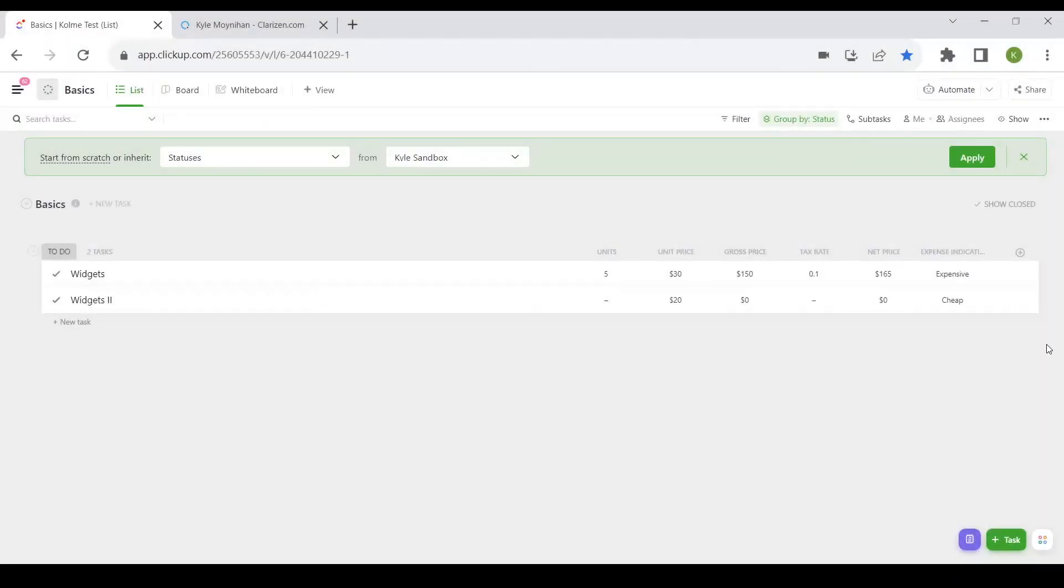As we can see here, I have two line items, widgets and widgets two, one with a unit price of 30 and another with a unit price of 20. Here, this says expensive, and here, this says cheap.